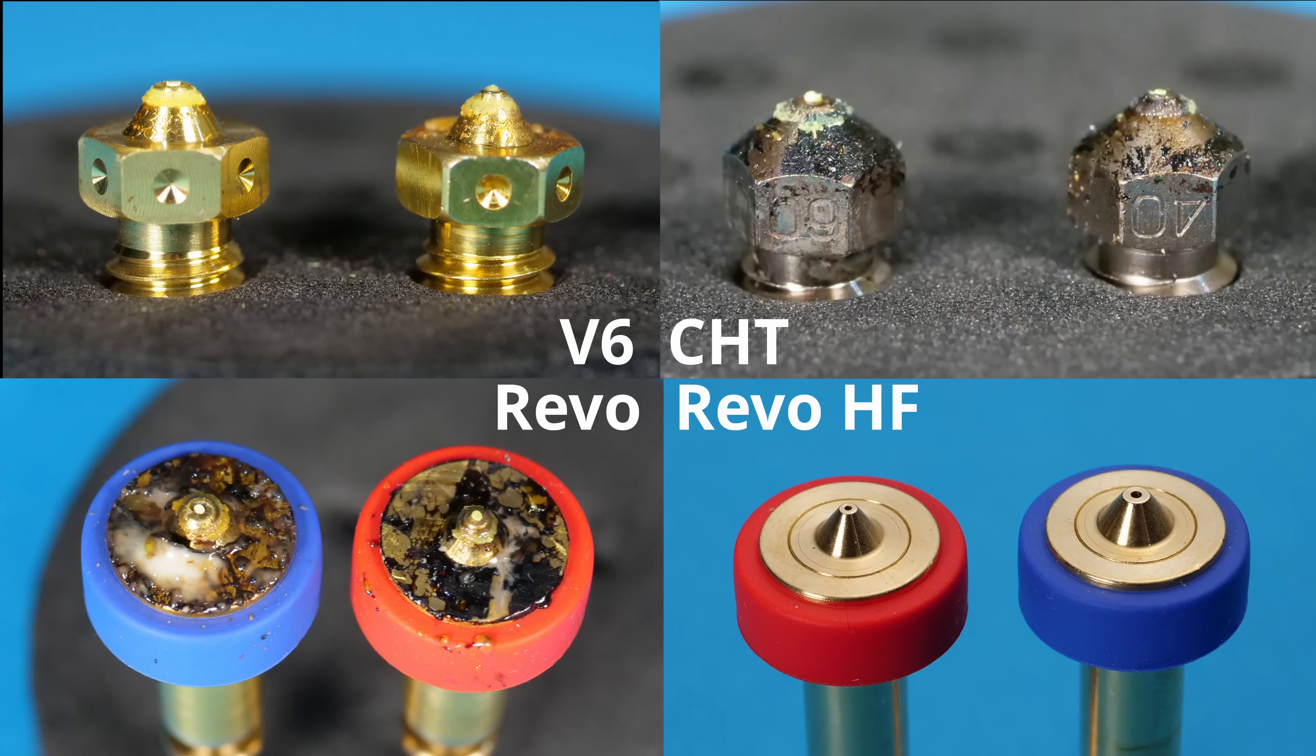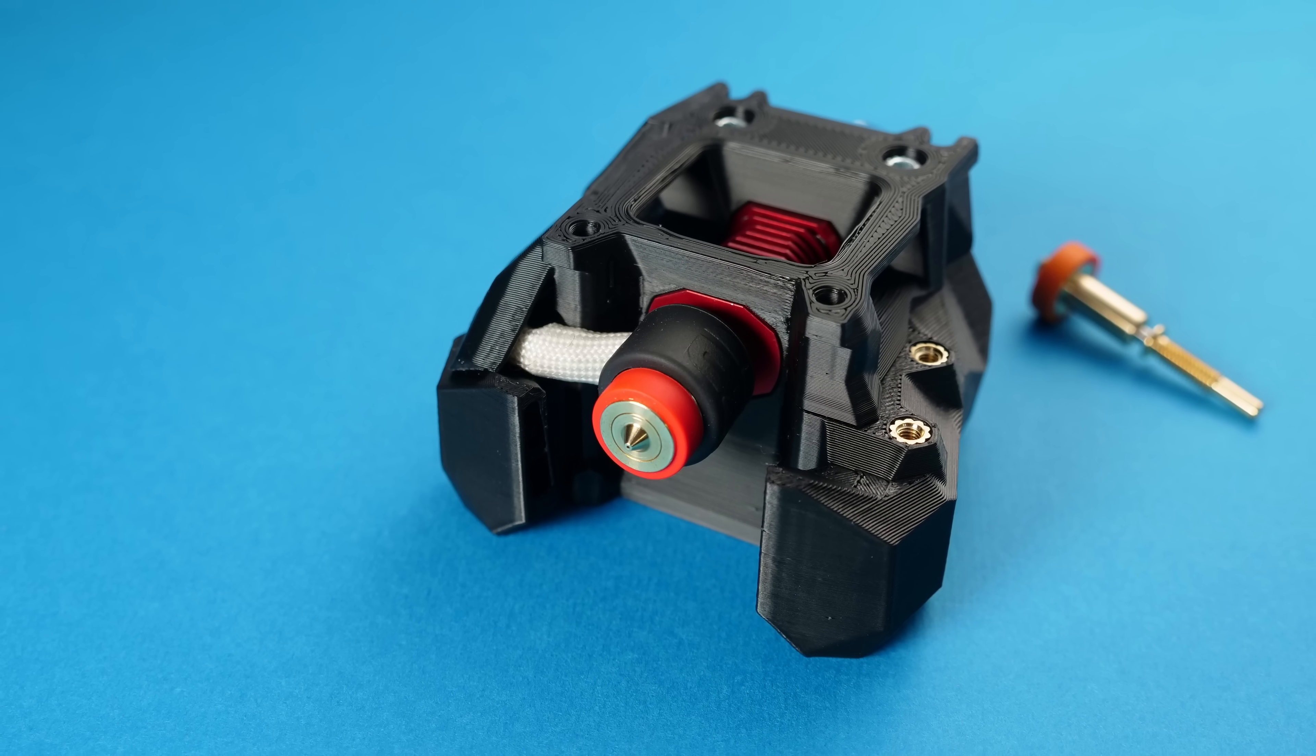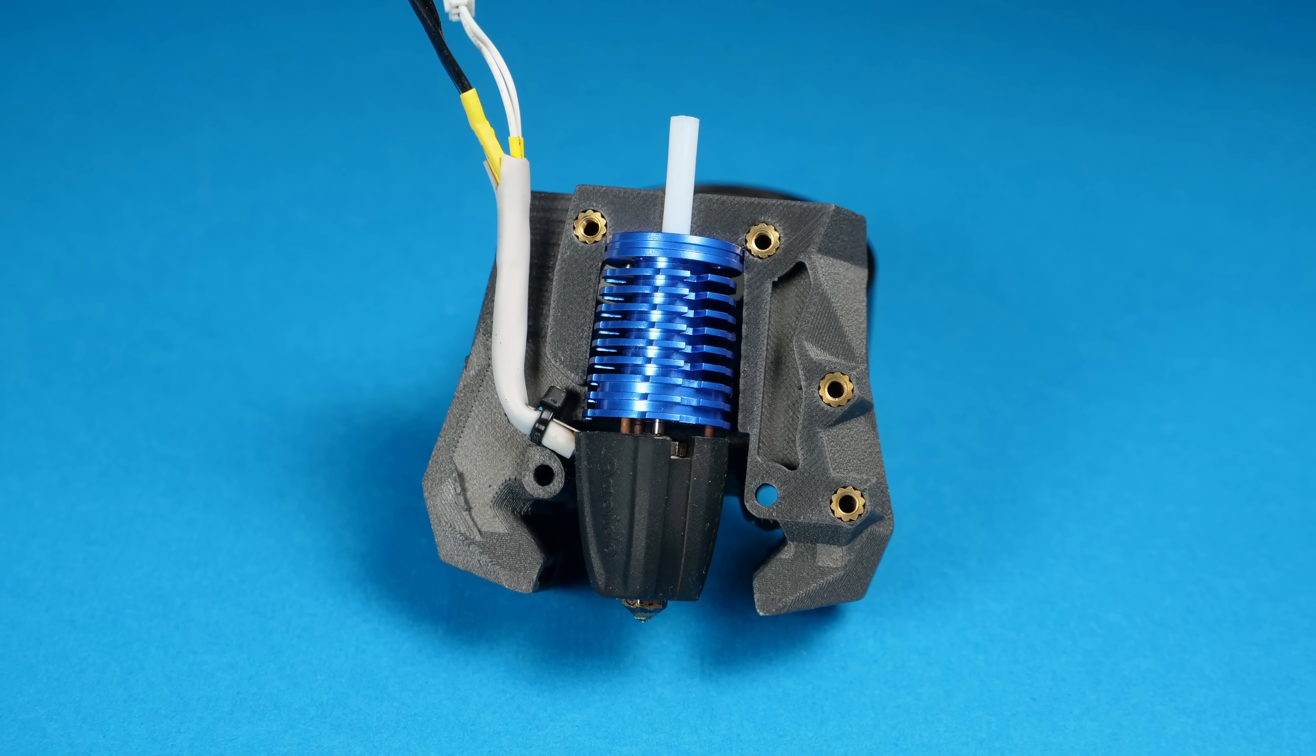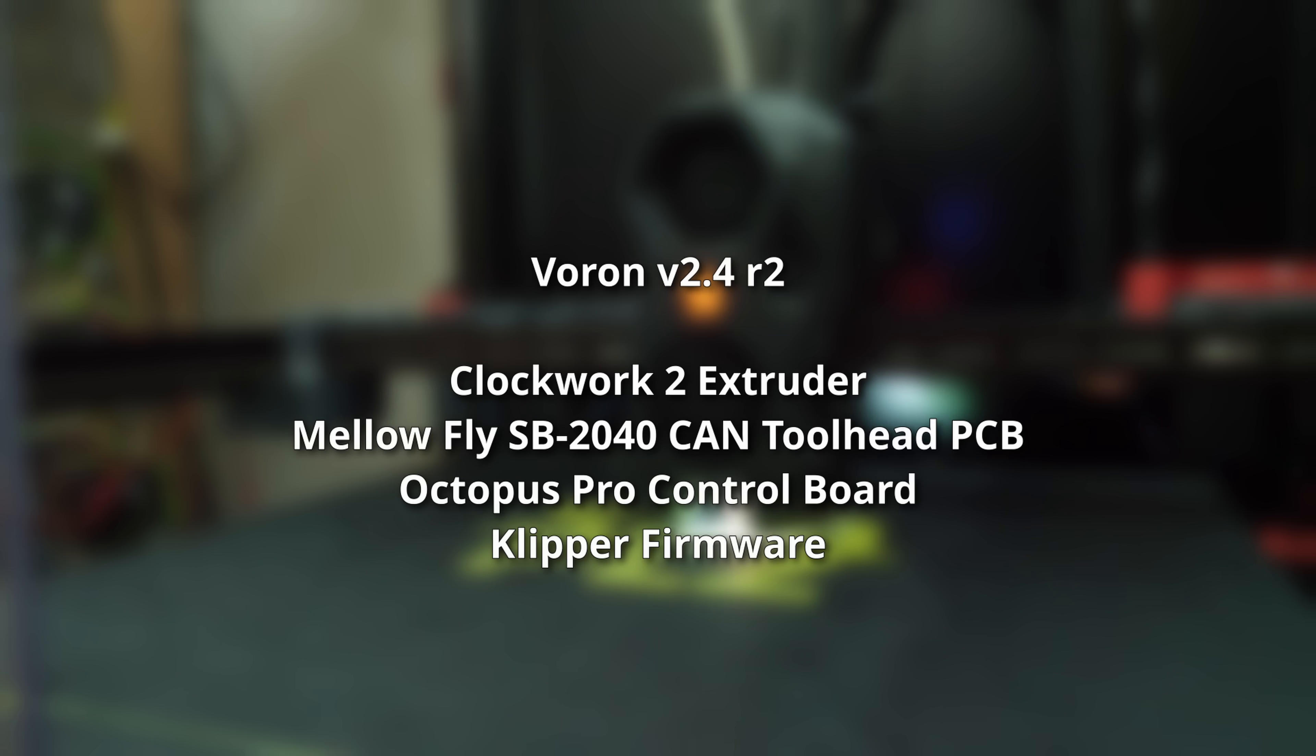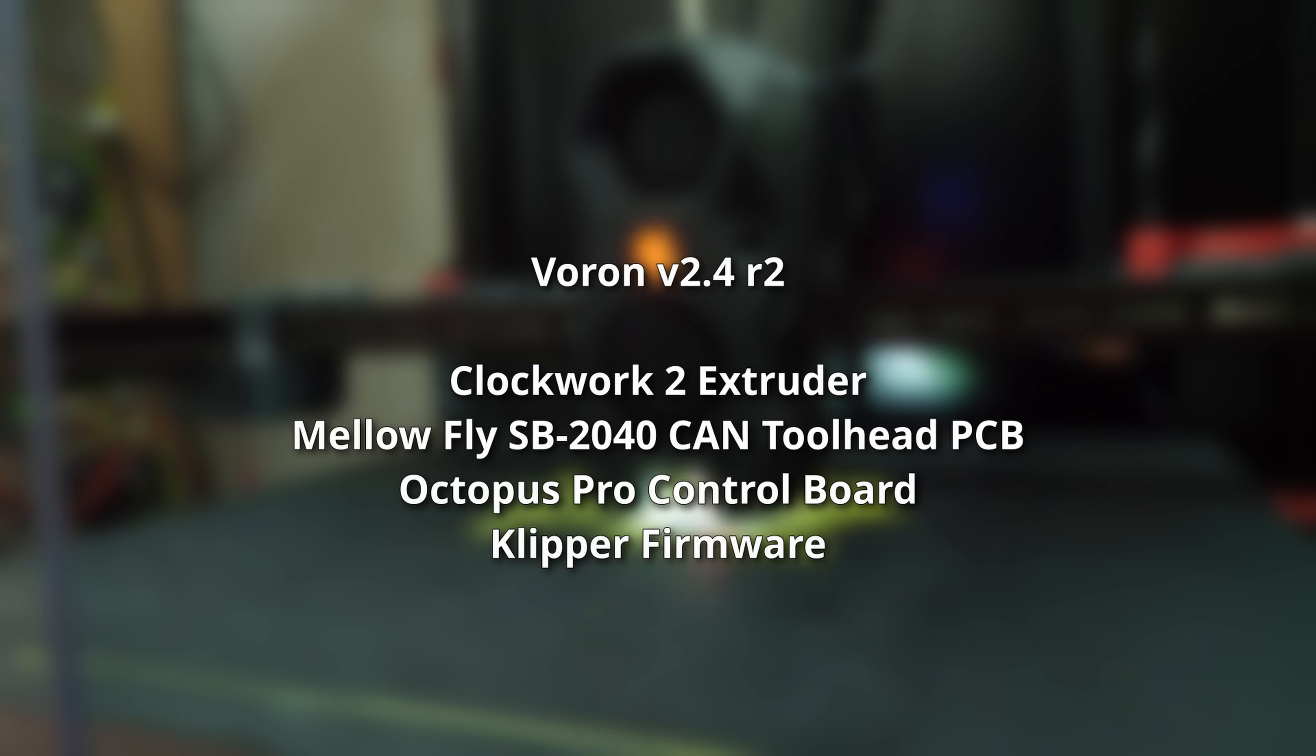So these are the eight nozzles I'm going to be testing. For the Revo setup I use the Revo Voron and the new 60W heater. For the screw in nozzles I use the Phaetus Rapido since at the time of filming it's a similar price at around £90 for the hotend and 0.4mm nozzle and also uses a cylindrical ceramic heater. Both hotend setups will be tested on my Voron 2.4 R2 using the Clockwork 2 extruder, Mellow Fly 2040 toolhead canboard, Octopus Pro mainboard and running Klipper firmware.